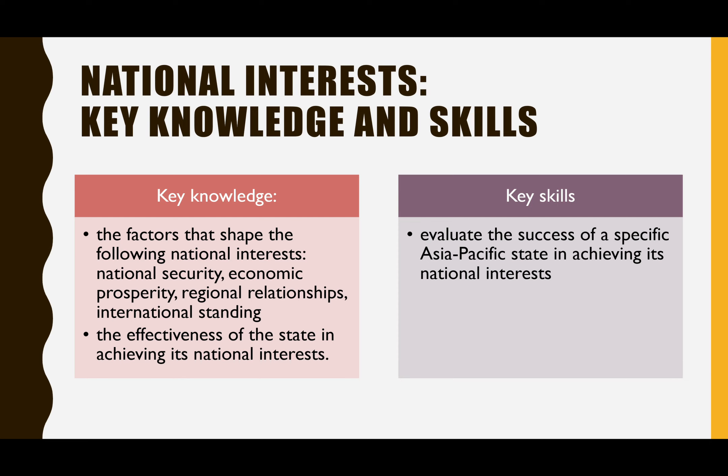The key knowledge for this part of the course is to look at factors that shape the national interest — essentially, why does the country try to pursue this type of national interest? For example, why is China trying to pursue economic prosperity? As well as looking at the effectiveness of the state in achieving this national interest — how it's been effective and also how it hasn't been effective.